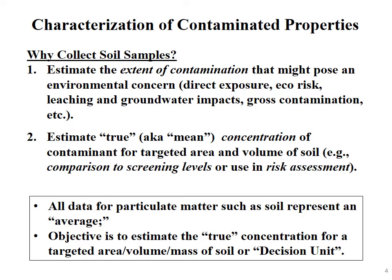Another key point: all data for a particular matter like soil represents an average. Laboratories might test a pinch or a spoonful of soil for lead or some other contaminant. If they tested individual particles they might get a completely different number — what they report is just an average of all the particulate matter they extracted and tested. The objective is always to estimate the true concentration of the contaminant, not only in the sample submitted to the laboratory but also for the area that sample is intended to represent in the field.